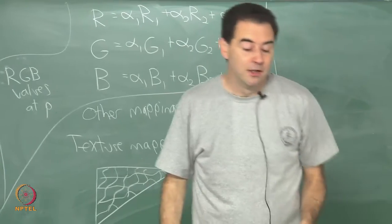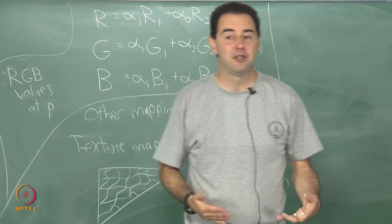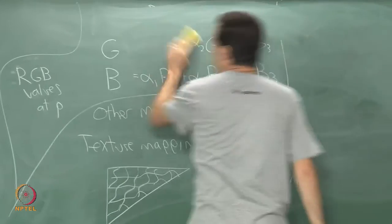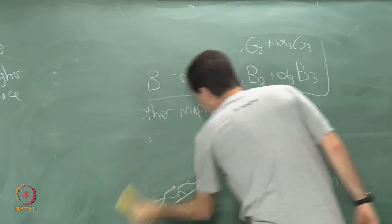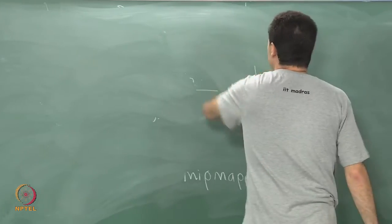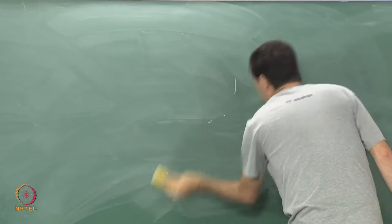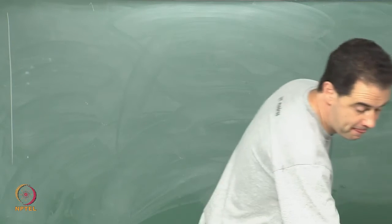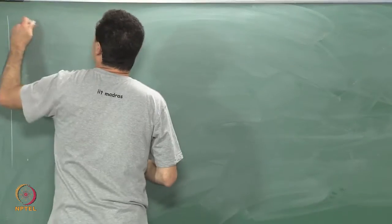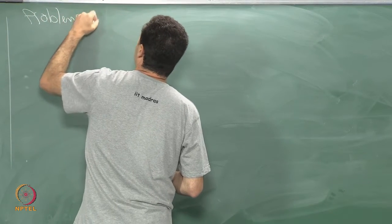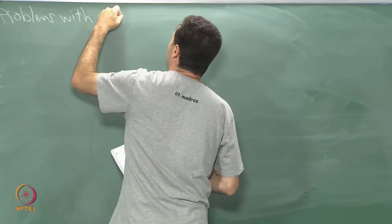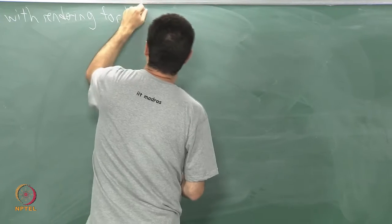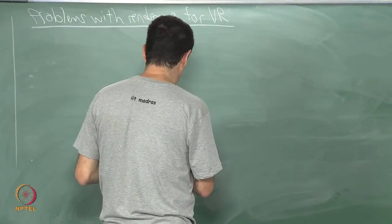I want to summarize some of the problems with rendering for virtual reality — this may be one of the most interesting parts of the lecture. I have mainly been covering standard techniques from computer graphics used for rendering to a screen that is fixed in space where the viewpoint is fixed. So let us look at problems with rendering for VR.